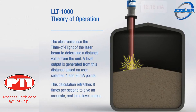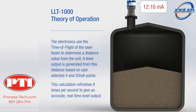The electronics use the time of flight of the laser beam to determine a distance value from the unit. A level output is generated from this distance based on user-selected 4 to 20 milliamp points. This calculation refreshes 8 times per second to give an accurate, real-time level output.